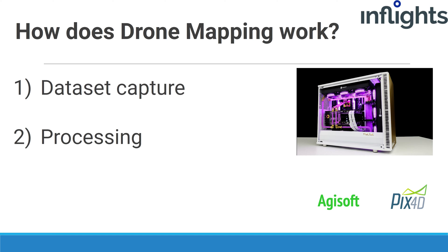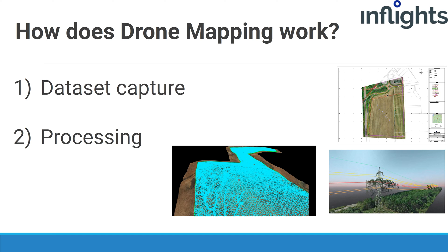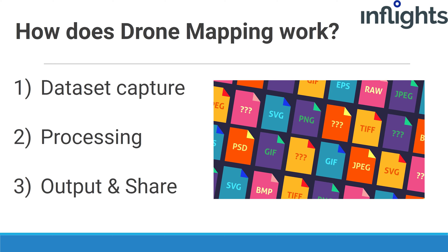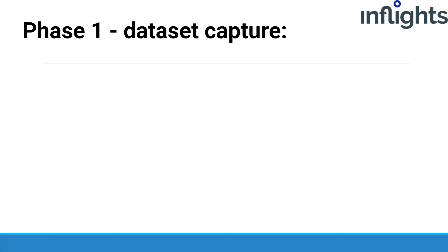point cloud or 3D model. For some projects there is a post-processing phase where we post-process the orthomosaic, point cloud and DSM into more advanced outputs like line work, thin surface and much more. After that the data can be delivered to the client in various file formats or in an online viewer.